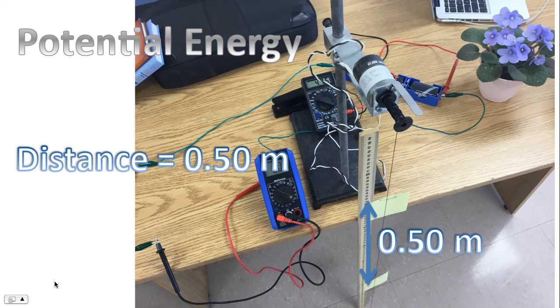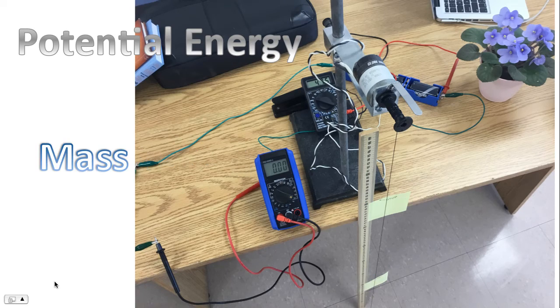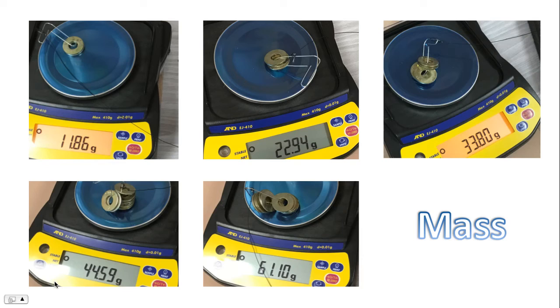For potential energy, we'll have to know the distance that the motor lifts the object through. For every trial today, it will always be 50 centimeters or 0.50 meters. In addition, we'll have to measure the mass. So let's start off with that. Please record these five different masses. These are the masses today that we're going to use to determine the efficiency of the motor.